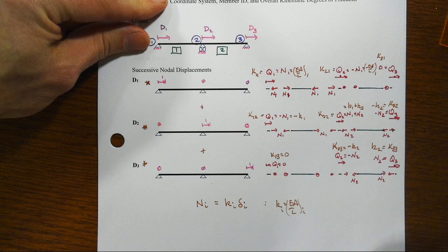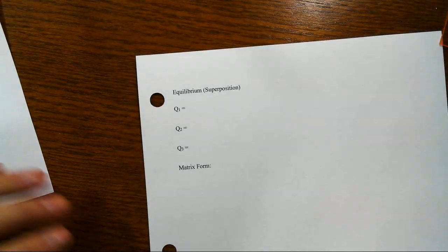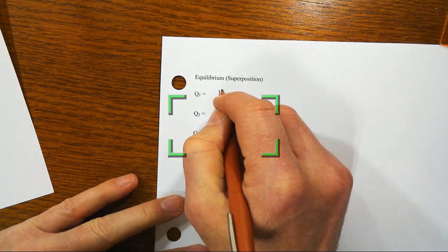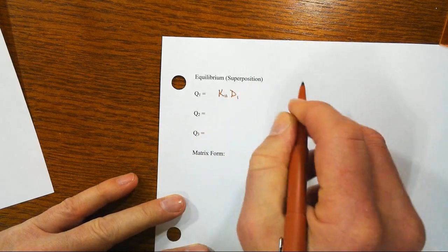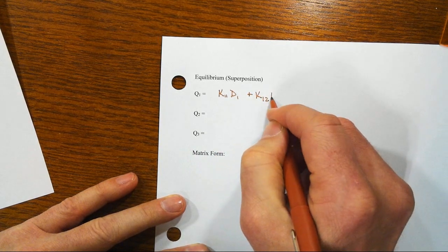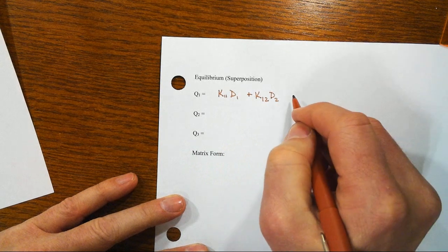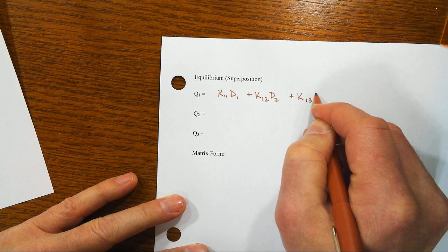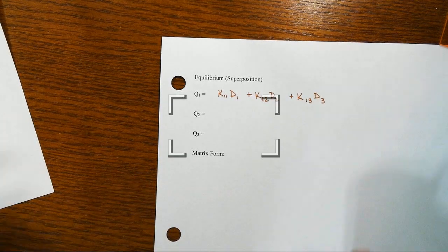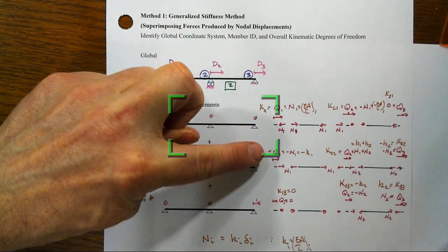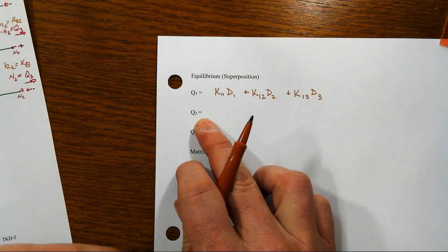And so notice here that the total force at Q1 is going to be the sum of all these factored pieces. So back over here, what we get is Q1 equals then K11 times the displacement that happens at D1 plus the force at 1 associated with the displacements that actually happen at 2 plus K13 times the displacements that are happening here. So what we really have done is just a superposition of this force plus that force to write that equation.